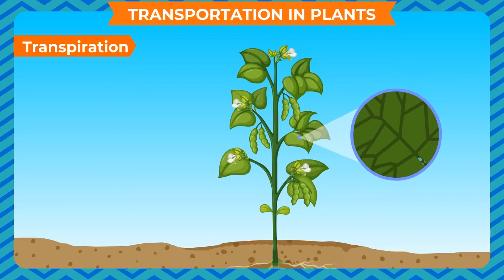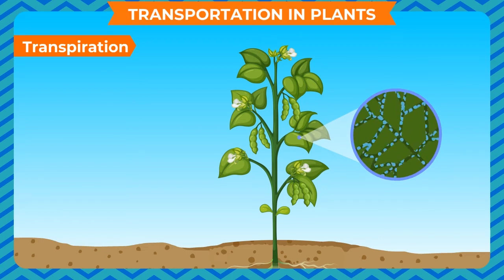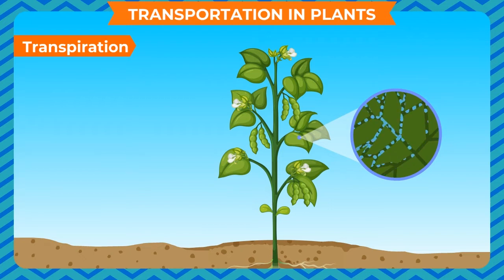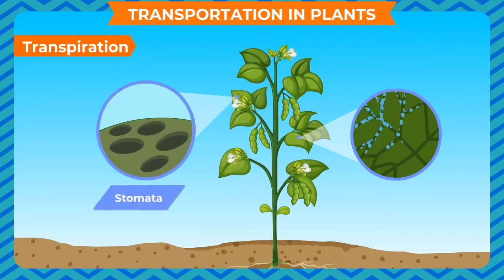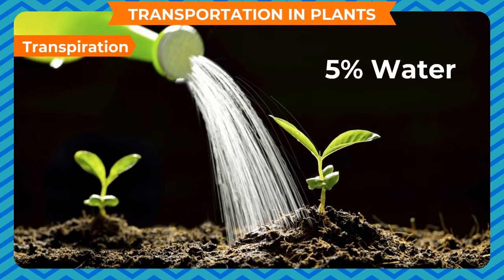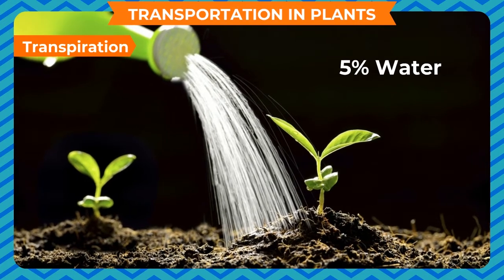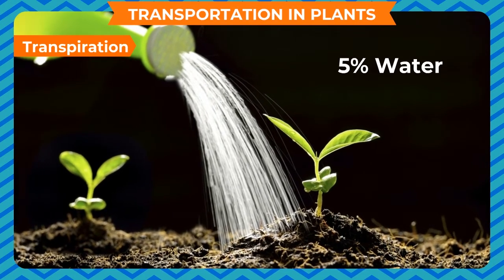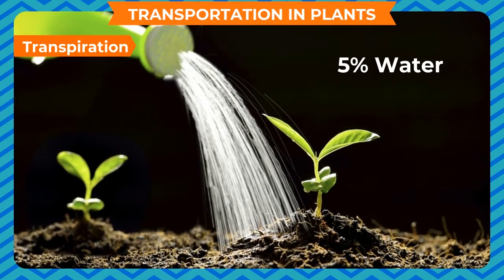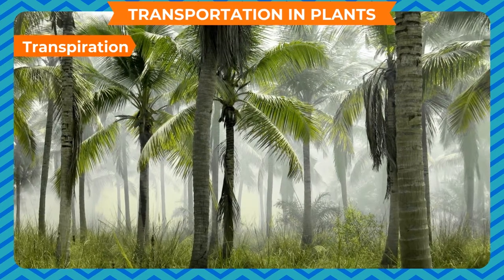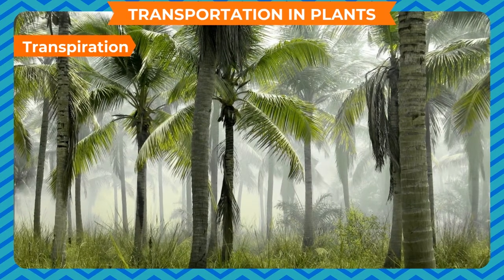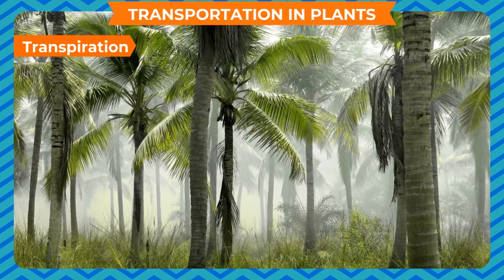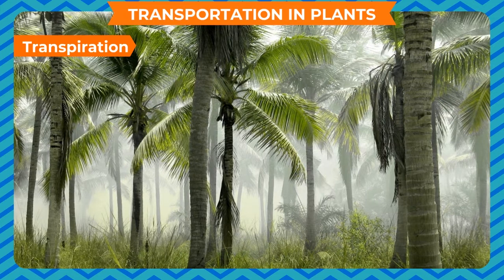Transpiration is the loss of water from leaves and other aerial parts of the plant into the air. It occurs through stomata. Only a small fraction, about 5% of the total water absorbed from the soil, is retained by the plant, and the remaining 95% is released into the atmosphere as water vapor.